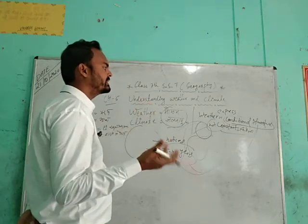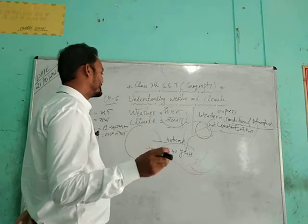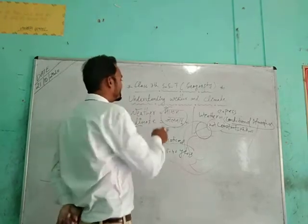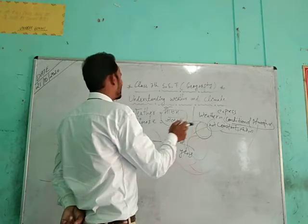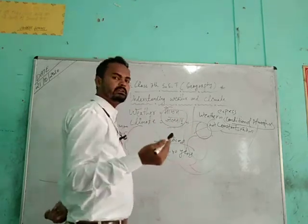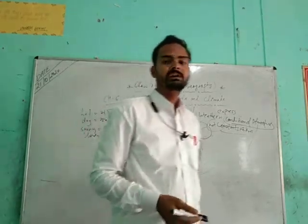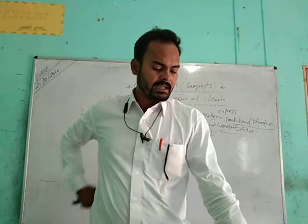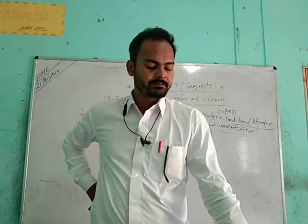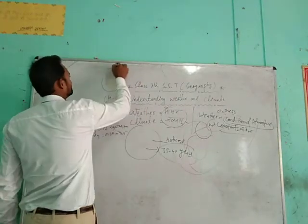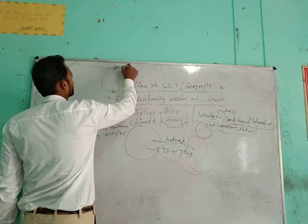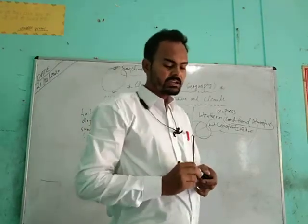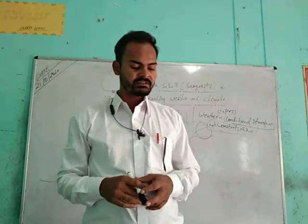So climate is the condition of the atmosphere of a particular region for a day, week, month or year accumulated over time. For example, the climate of the polar region is always snowy — there is snow always. So the climate of the polar region is different from the climate of the region located close to the equator.